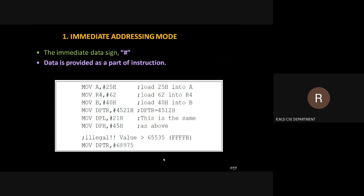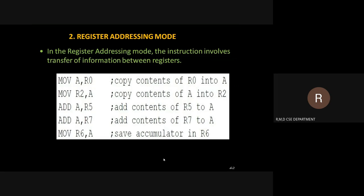So now immediate mode. Immediate in the sense, by the name of immediate, the data is immediately transferred to that particular instruction. We can assign the data directly to the instruction, which is indicated by the hash symbol. The data is provided as a part of the instruction. For example, MOV A, #25H — 25H is our hexadecimal data and it is immediately transferred to the accumulator. This is called the immediate addressing mode.